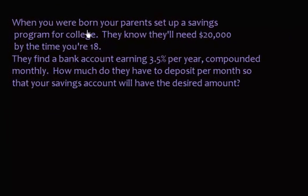The next example is a little bit different. When you're born your parents set up a savings program for college, very similar, but instead of knowing what they're going to deposit every month, they know that they need $40,000 by the time you're 18. They find a bank account earning 3.5% compounded monthly.